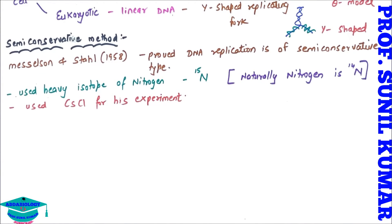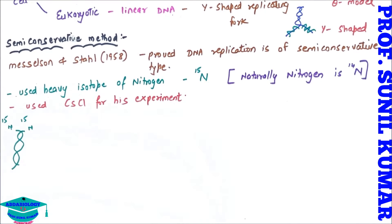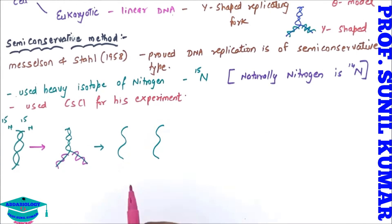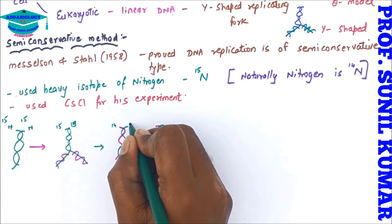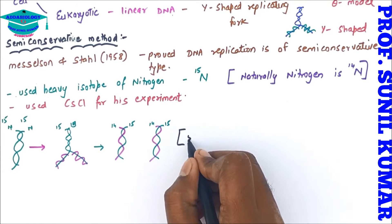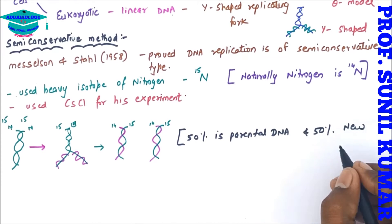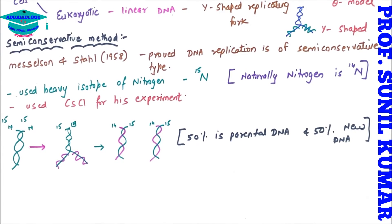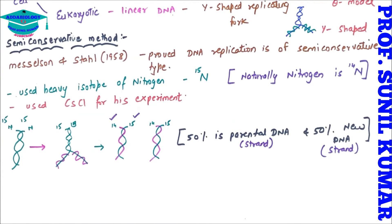Starting with DNA made of N15, after replication and centrifugation we get different bands showing that one DNA strand is N15 and the other strand is N14. This means 50 percent of the parental information remains conserved in the new DNA. So 50 percent is the parental DNA strand and another 50 percent is the new daughter strand — therefore it is called the semi-conservative method.